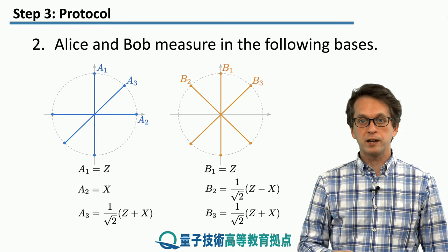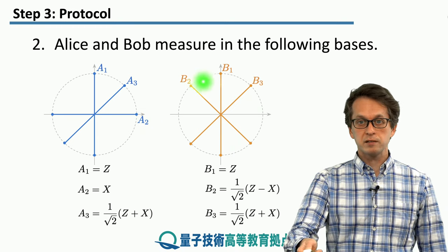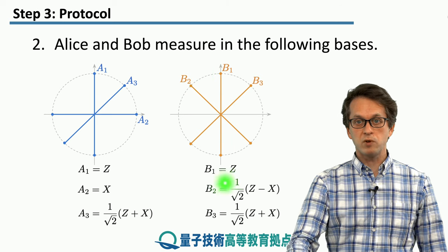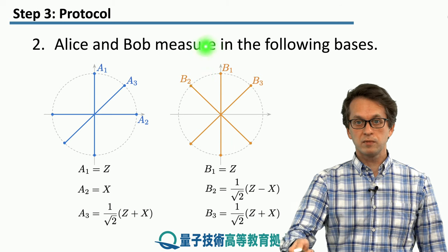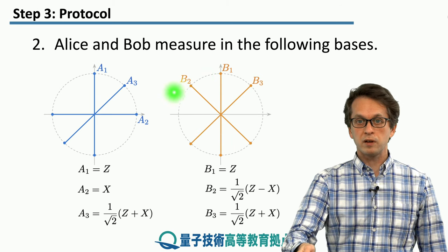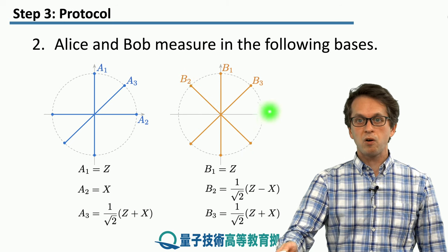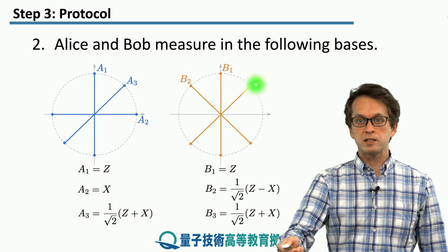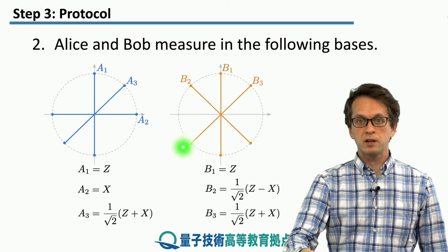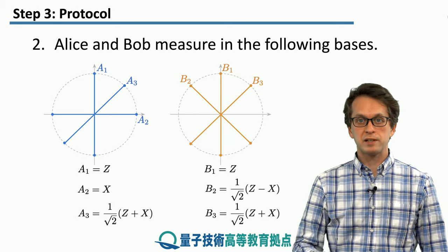Bob, on the other hand, can also measure in the Z basis given by B1, or in a rotated basis B2, which is Z minus X, or in the basis B3, given as Z plus X.